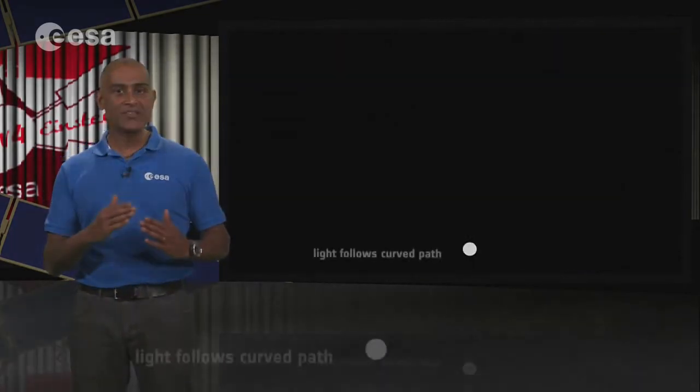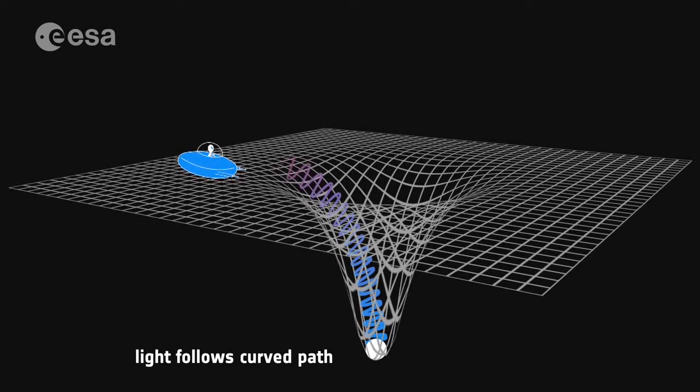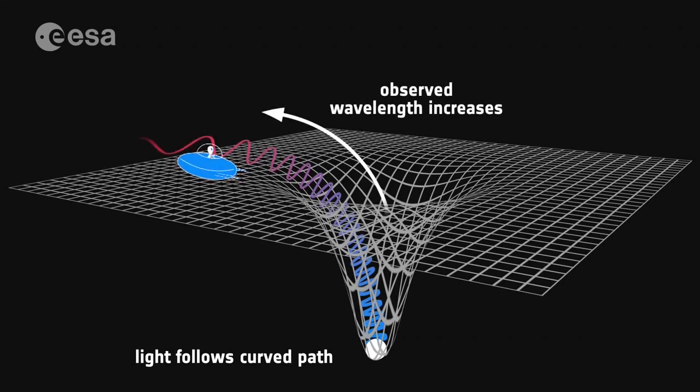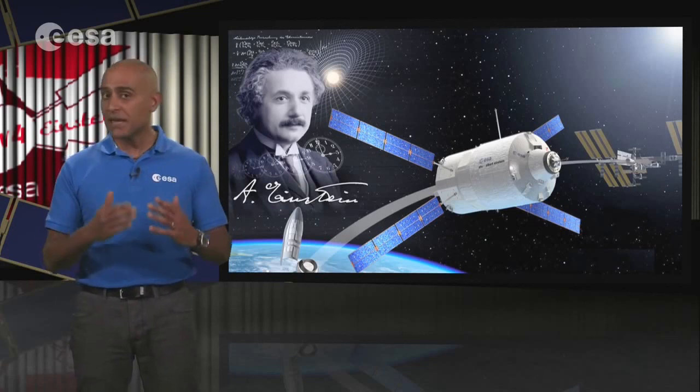Einstein conducted another thought experiment in which light was fired upwards from Earth. The photons must, from the perspective of an observer higher in the gravity field, lose energy to climb higher. And they do so through a lengthening of their wavelength and a reduction in their measured frequency, a gravitational redshift. This implies that the same photon event will appear to have different wavelengths, depending on the position of the observer in the gravity field.